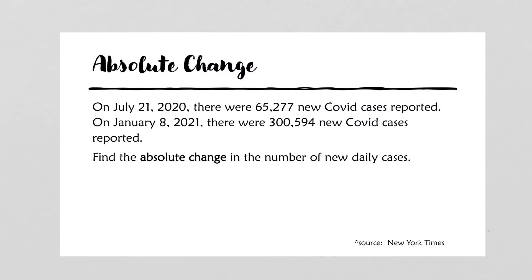We'll start with an example. On July 21, 2020, there were 65,277 new COVID cases reported. On January 8, 2021, there were 300,594 new COVID cases reported. Find the absolute change in the number of new daily cases.